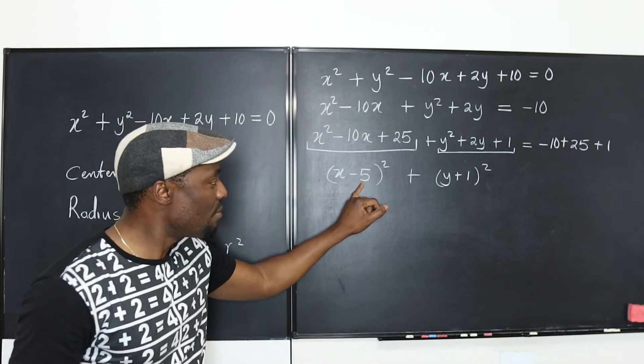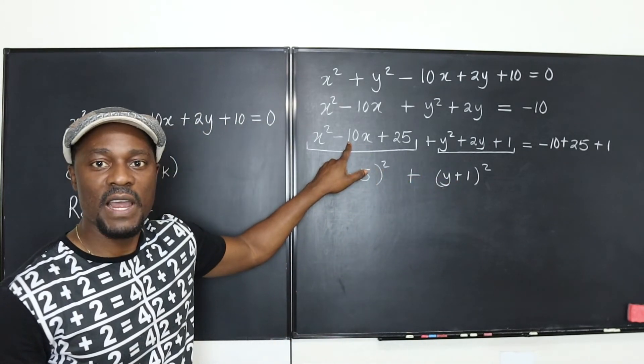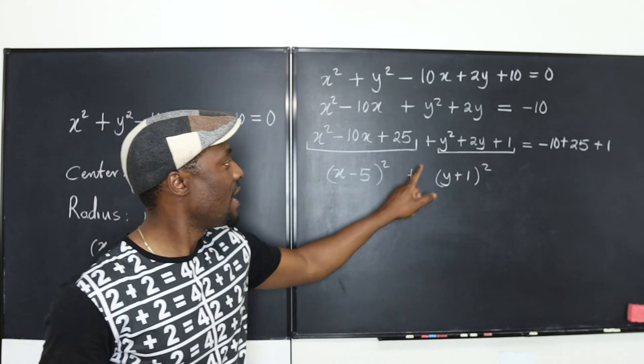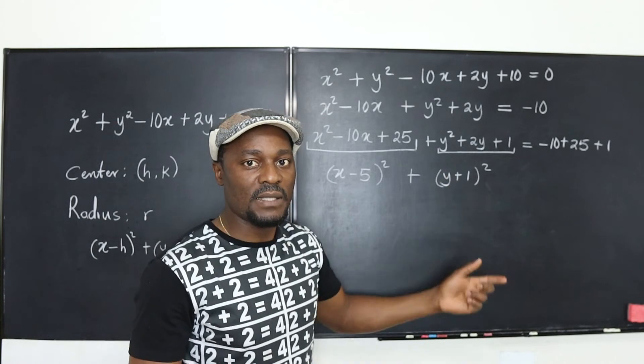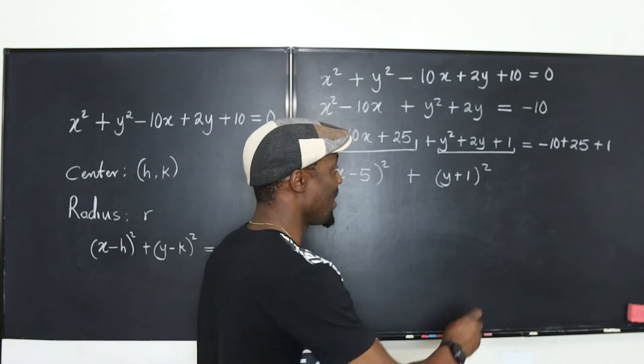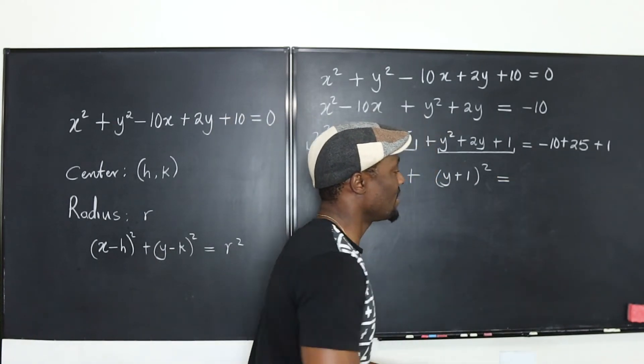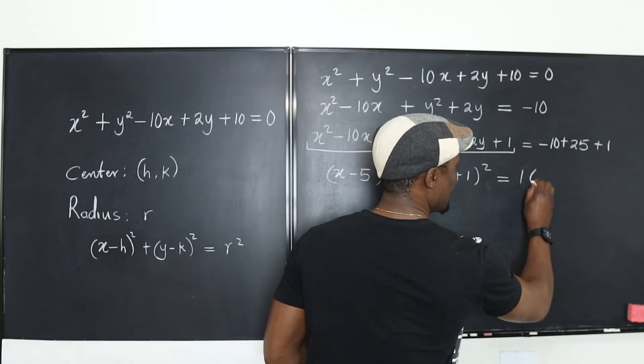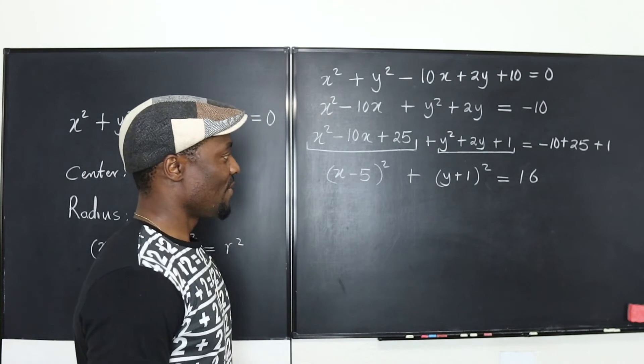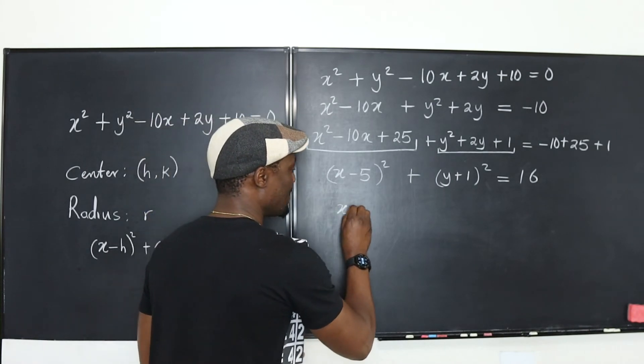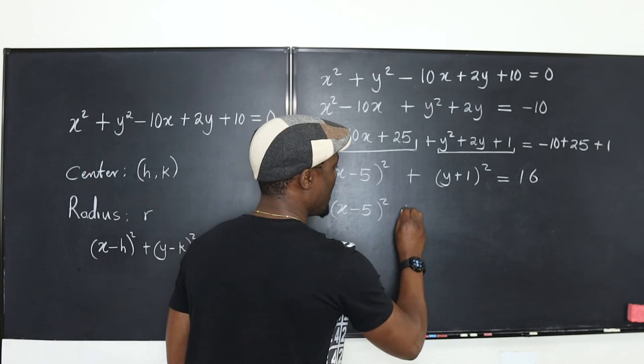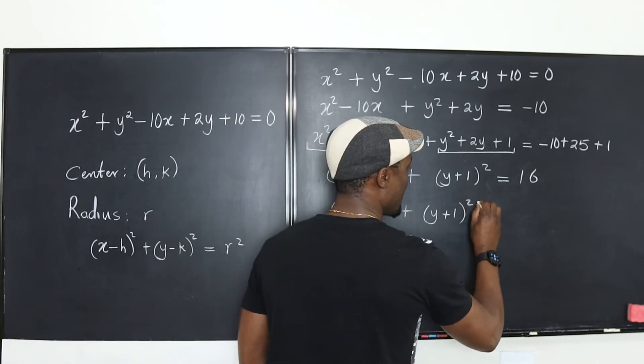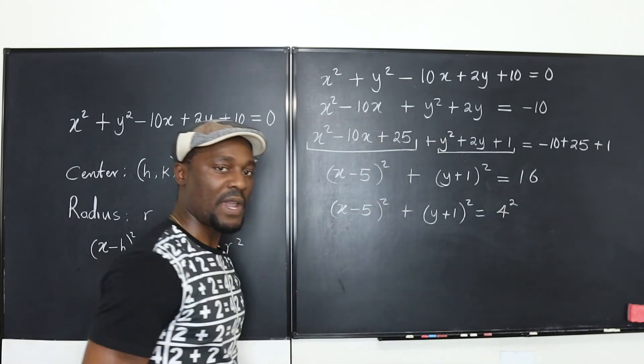How do I know what numbers to put in here? It's whatever you got when you divided by 2. Divide -10 by 2, you get -5. Divide +2 by 2, you get +1. On the right hand side, -10 + 25 + 1 gives us 16. So we have (x - 5)² + (y + 1)² = 4².